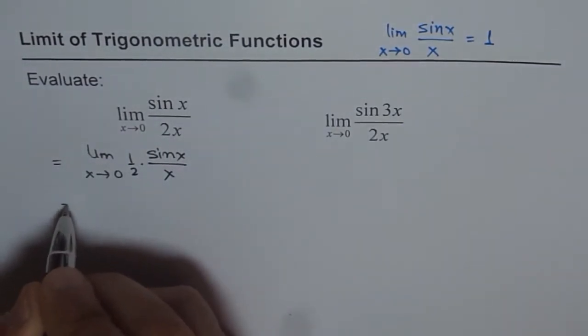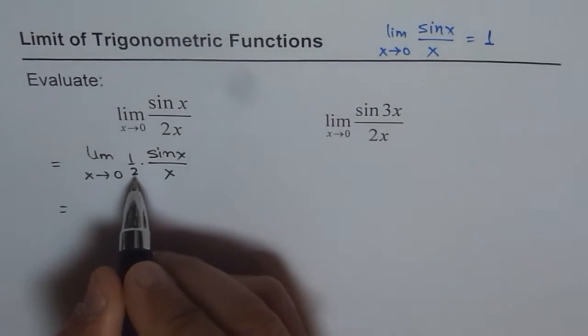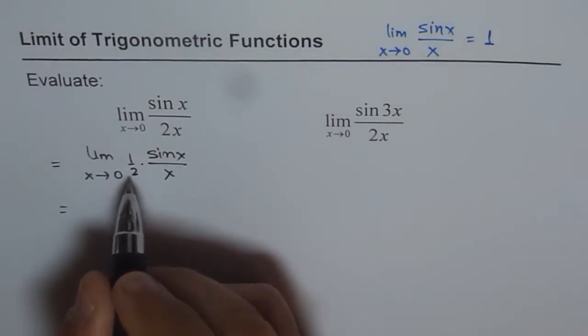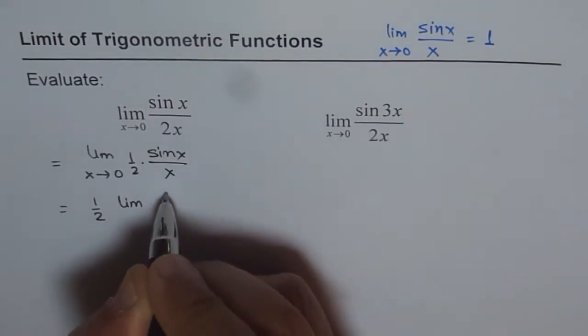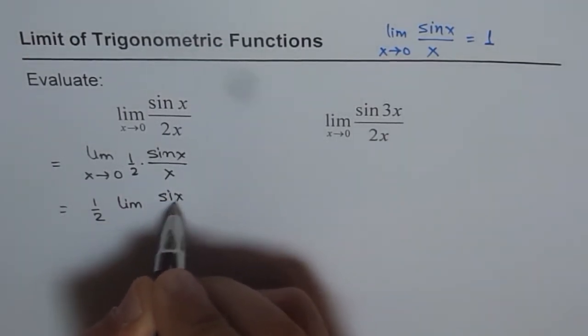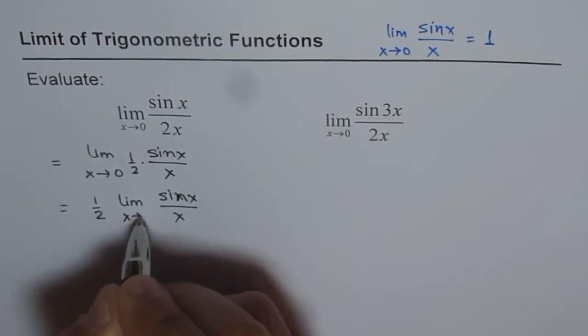Now, as you know, half will approach half only since that is a constant. So we can write this as half limit of sin x over x as x approaches 0.